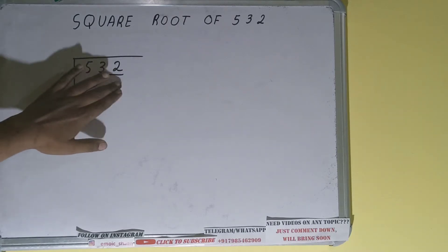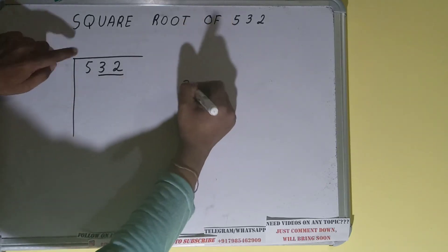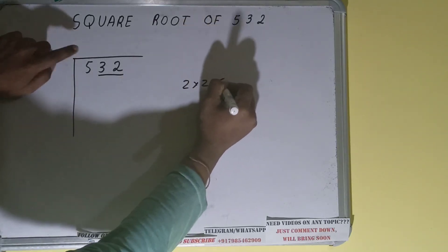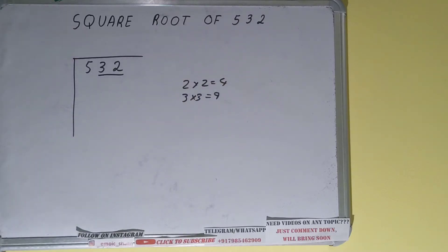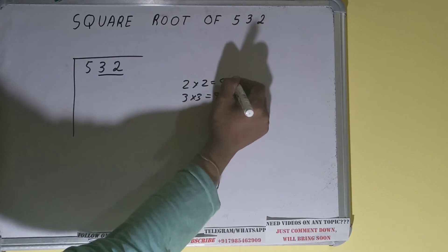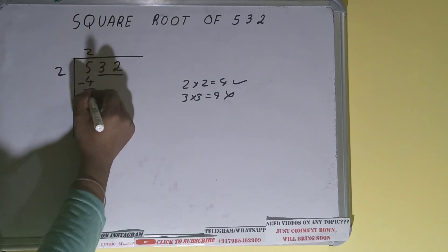So first we'll divide this 5 and then we'll bring down the pair. The rule is whatever number we write here we have to write here also. So if we write 2 here and 2 here it will give 4. If we write 3 here and 3 here it will give 9. We cannot use 9 because it is greater than 5, so we have to use this 4. So 2 here and 2 here will give 4. Subtract and 1 will be left.